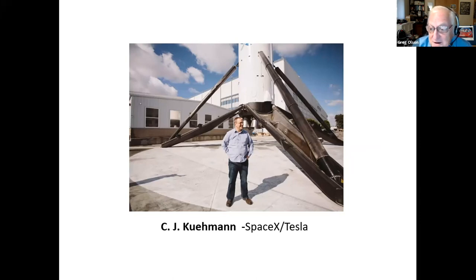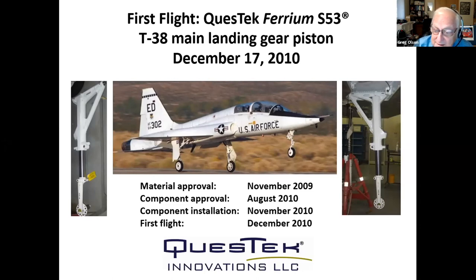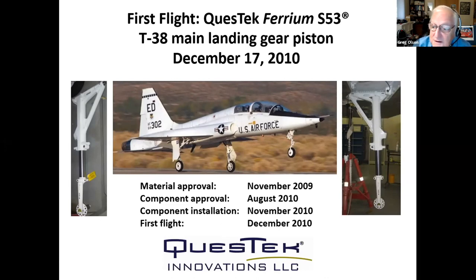The landing gear he's standing in front of here actually used components of the Ferry MS-53 stainless steel that he designed when he was at Questek. In 2010, the first flight of landing gear constructed of this stainless steel occurred. This is not only the first stainless steel to meet the mechanical performance requirements of landing gear and allow the elimination of toxic cadmium plating, but much more significantly, this is the first fully computationally designed and qualified material to go all the way to flight — a measure of maturity of this technology already a decade ago.